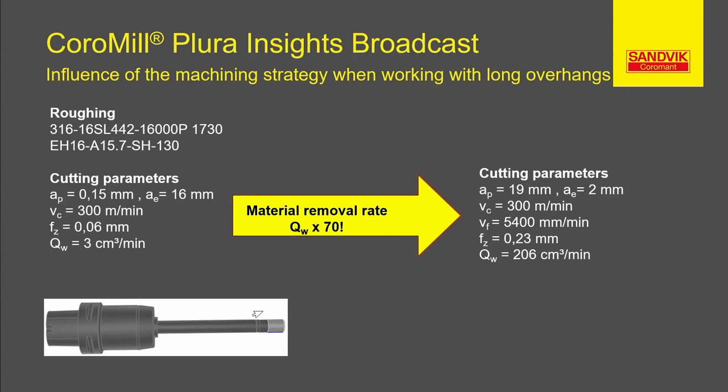That's what I call a great result. By changing the strategy, we achieve 70 times higher chip removal rate with a Q value of over 200 cm³ per minute. The trick here is the small radial engagement in which only one cutting edge is in contact with the material at a time, which means reduced tool engagement time. For efficient machining with long overhangs, always use the maximum cutting edge length of the tool and provide small radial engagements. This also has an effect of distributing the wear over a greater length.